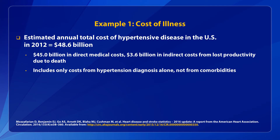In the American Heart Association's 2016 statistical update, the authors reported that the total annual cost of hypertensive disease in the U.S. in 2012 was $48.6 billion. This included $45 billion from direct medical costs such as inpatient hospital stays or prescribed medications, and $3.6 billion in costs from lost productivity due to premature death resulting from hypertension. This estimate is conservative because it includes only costs from diagnoses of hypertensive disease and does not include attributable costs from comorbidities, thus underestimating the total costs attributable to the disease.